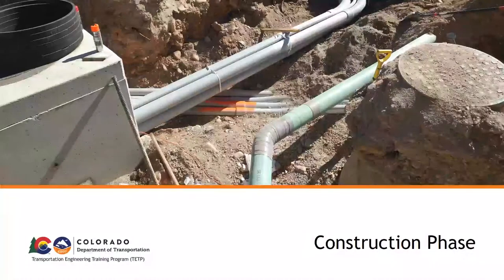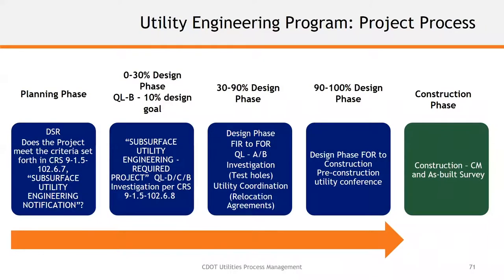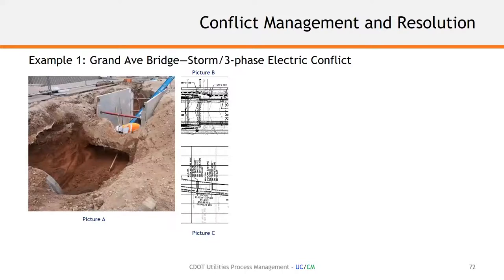Welcome to Module 6 of the CDOT Utilities Process Management course. We're going to examine how all the planning and design activities come together in the construction phase. We will look at some real project examples from Grand Avenue Bridge and Glenwood Springs and see how having on-site utility project management was able to resolve several issues, and show how construction management and utility coordination working hand-in-hand can be beneficial.